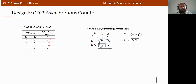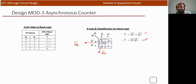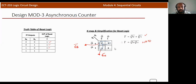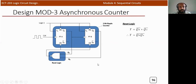Using a K-map with two variables QB and QA, we identify the groups: one group is QB̄, another is QĀ. The resulting expression is Y = QB̄ + QĀ, which by De Morgan's theorem is equivalent to a NAND gate: Y = (QB · QA)̄.